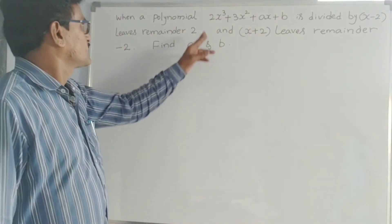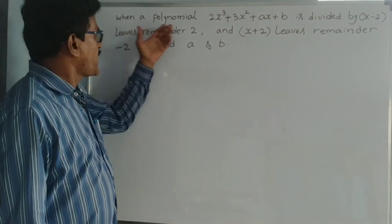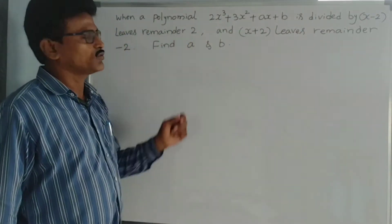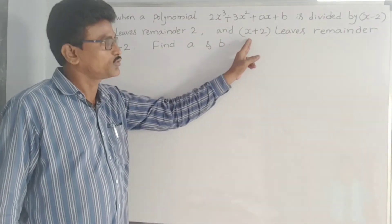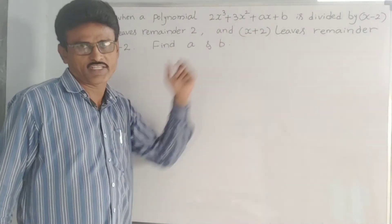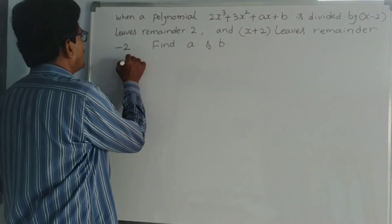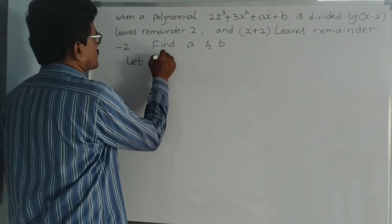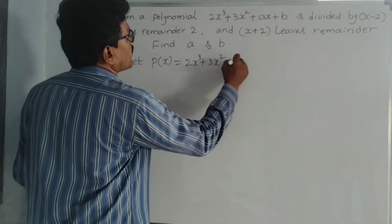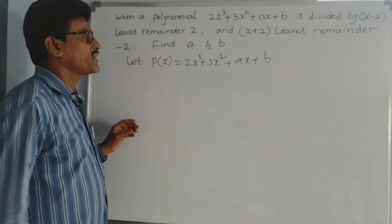See here: 2x cubed plus 3x squared plus ax plus b is the cubic polynomial. When this cubic polynomial is divided by x minus 2, remainder is 2. And the same polynomial when divided by x plus 2, this time remainder is minus 2. Then what is a? What is b? We will find by using remainder theorem. Let p of x be the given polynomial: 2x cubed plus 3x squared plus ax plus b.